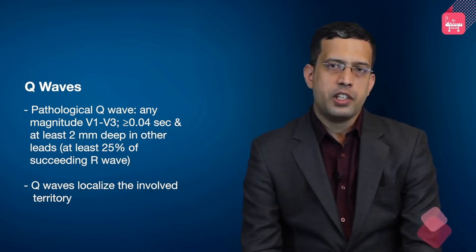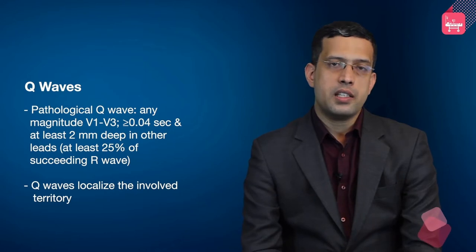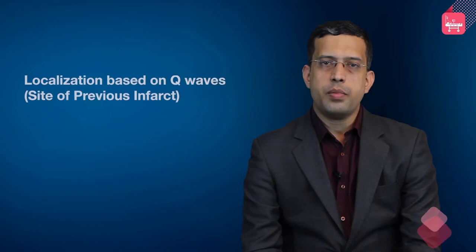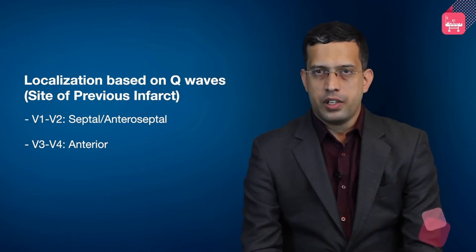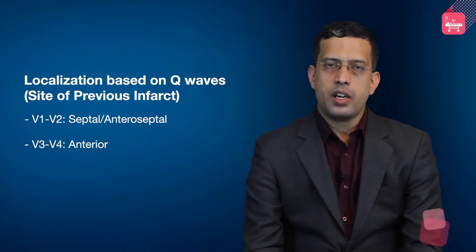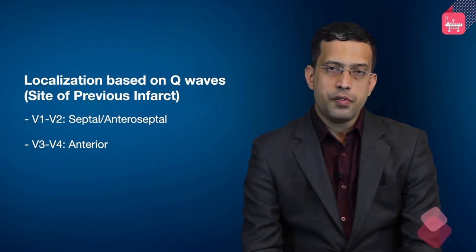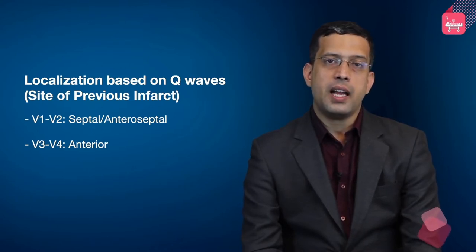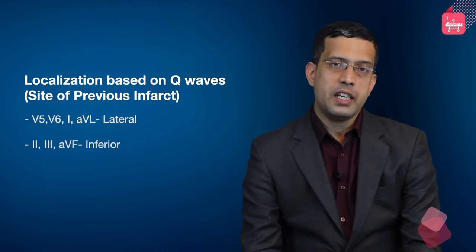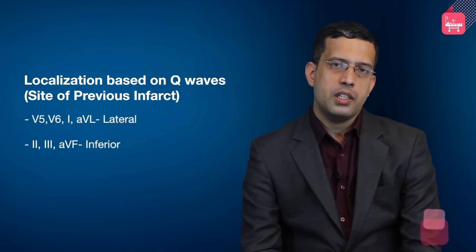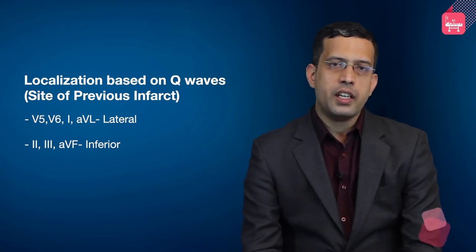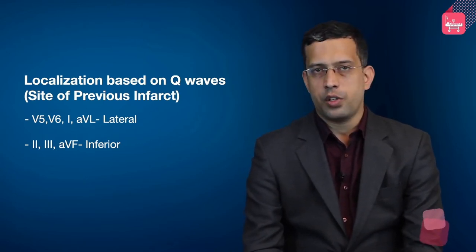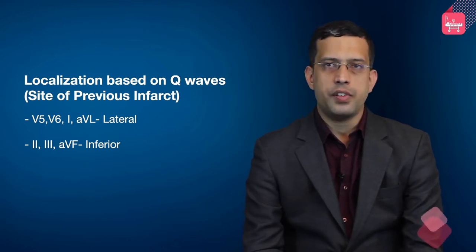Q waves also localize the involved territory of the myocardium based on which leads display them. Q waves in V1 and V2 indicate septal or anteroseptal location; V3 and V4 indicate anterior territory; V5, V6, I and AVL indicate lateral infarct; leads II, III and AVF indicate a previous inferior infarct.